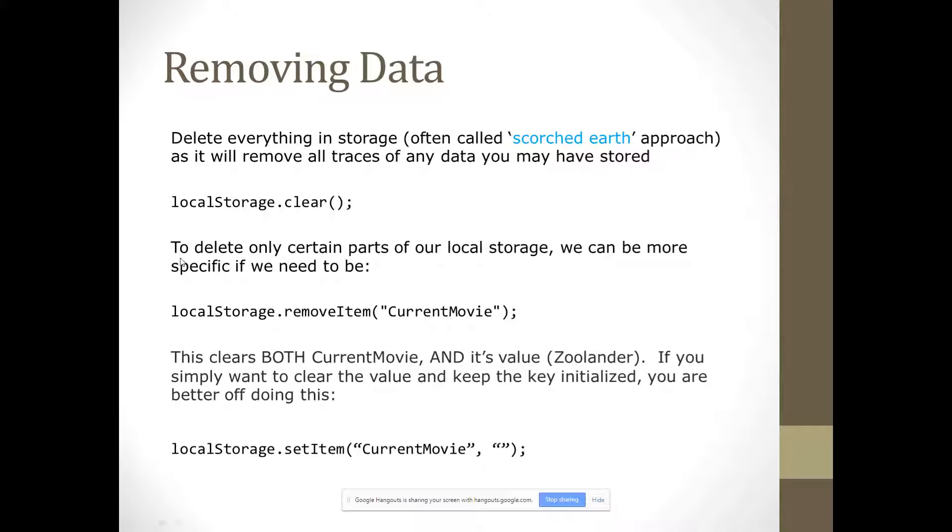But there are other ways where we can delete at one string. If we did localStorage.removeItem, current movie, that'll remove current movie and what current movie is. So, not only will we lose Zoolander, but we will lose current movie. A safer approach is to do something like localStorage.setItem, current movie, and then just closed bracket, closed quotations. So, it's like, you're setting it to nothing, basically. Okay.